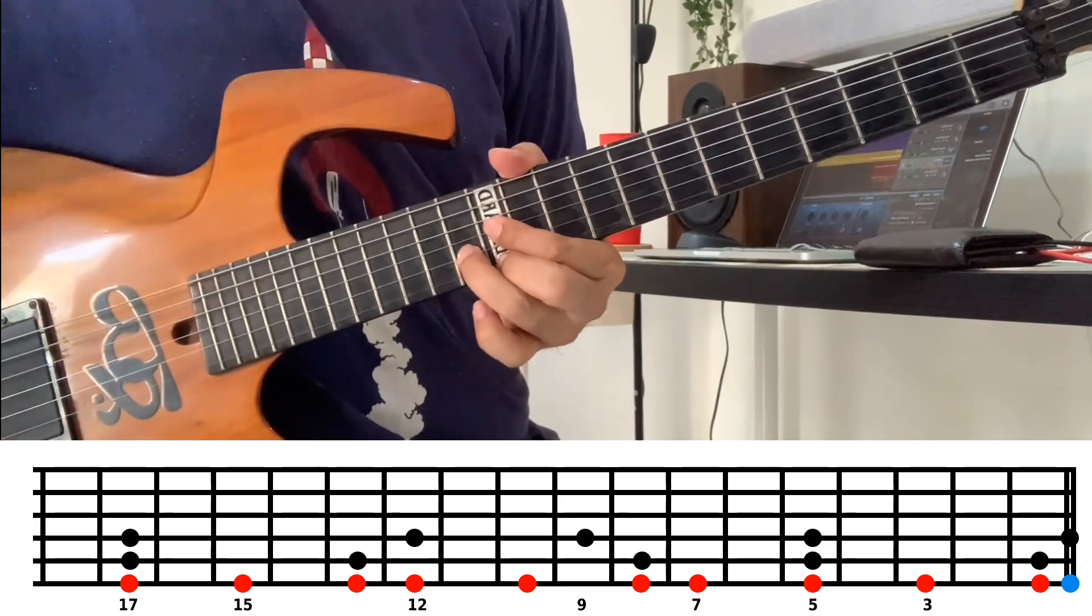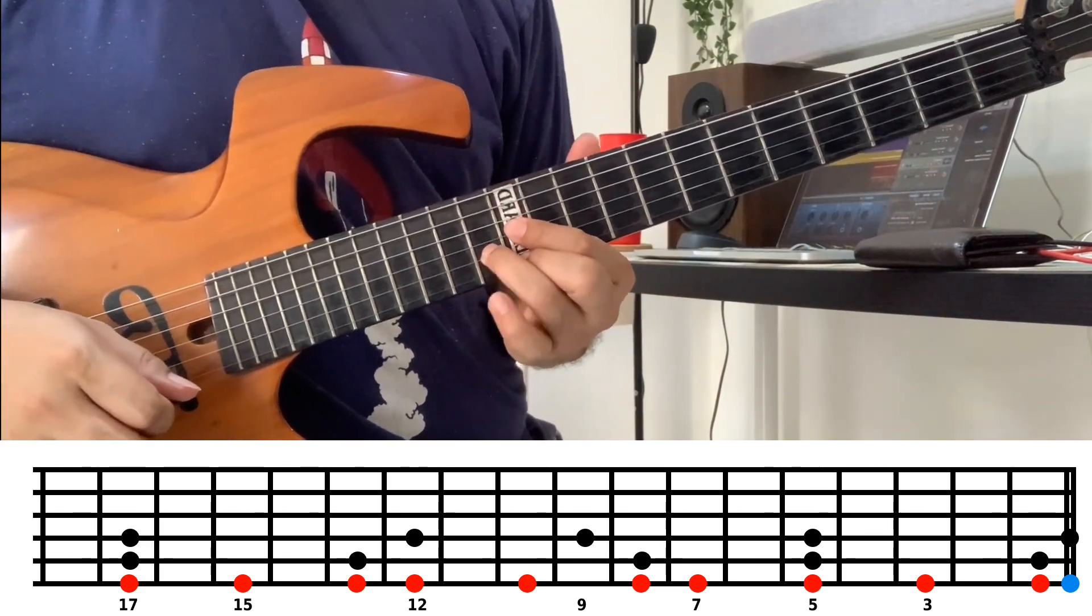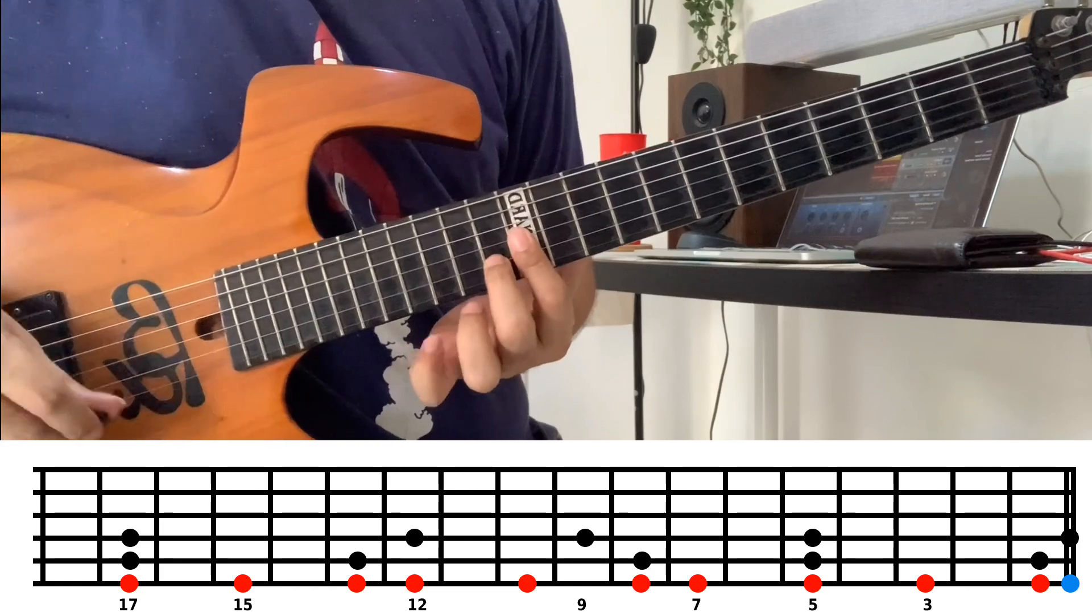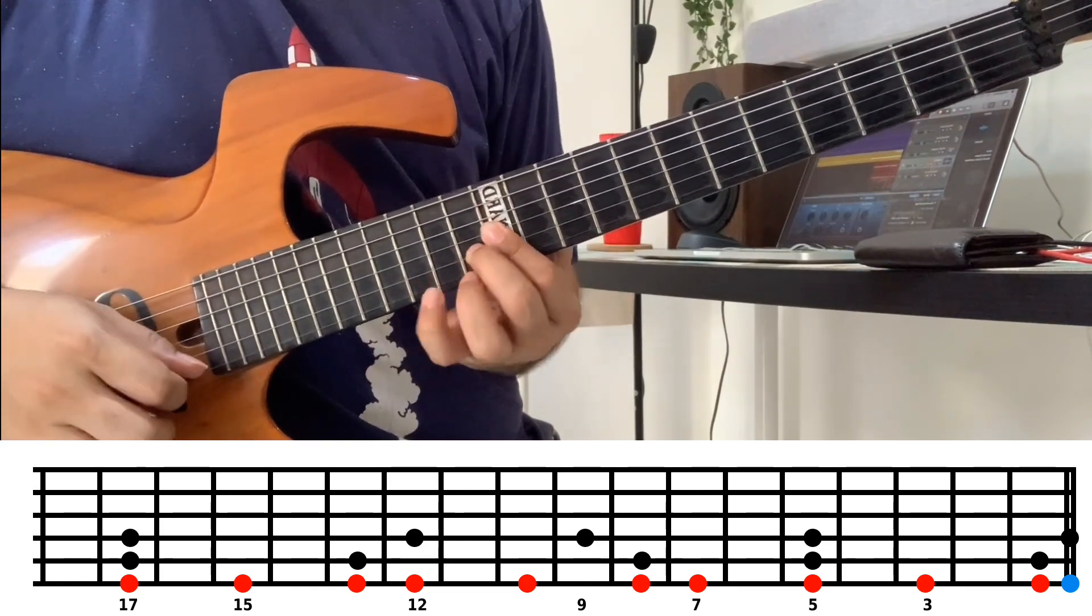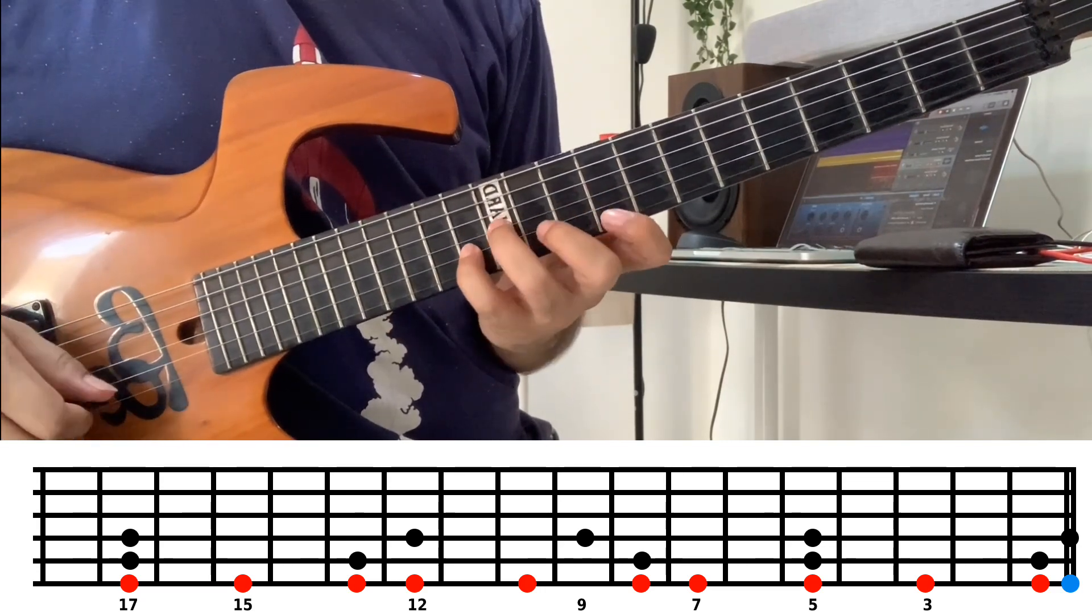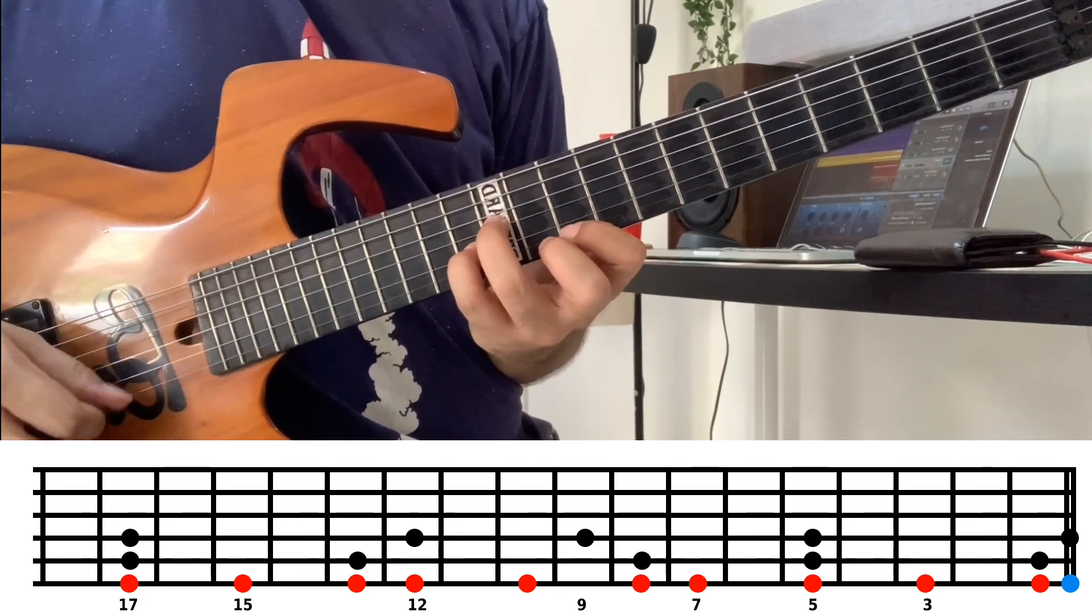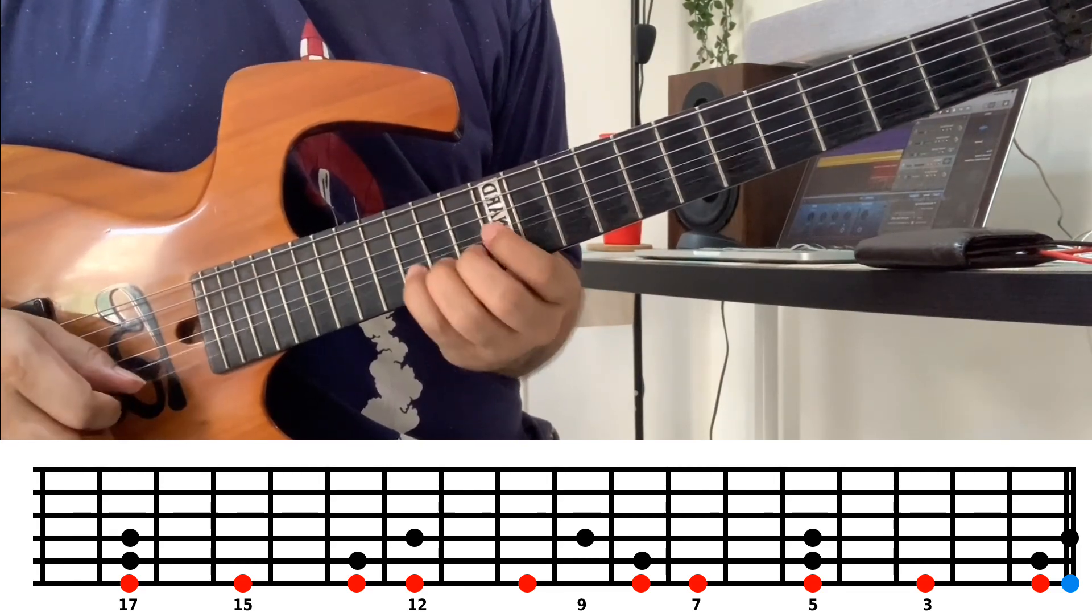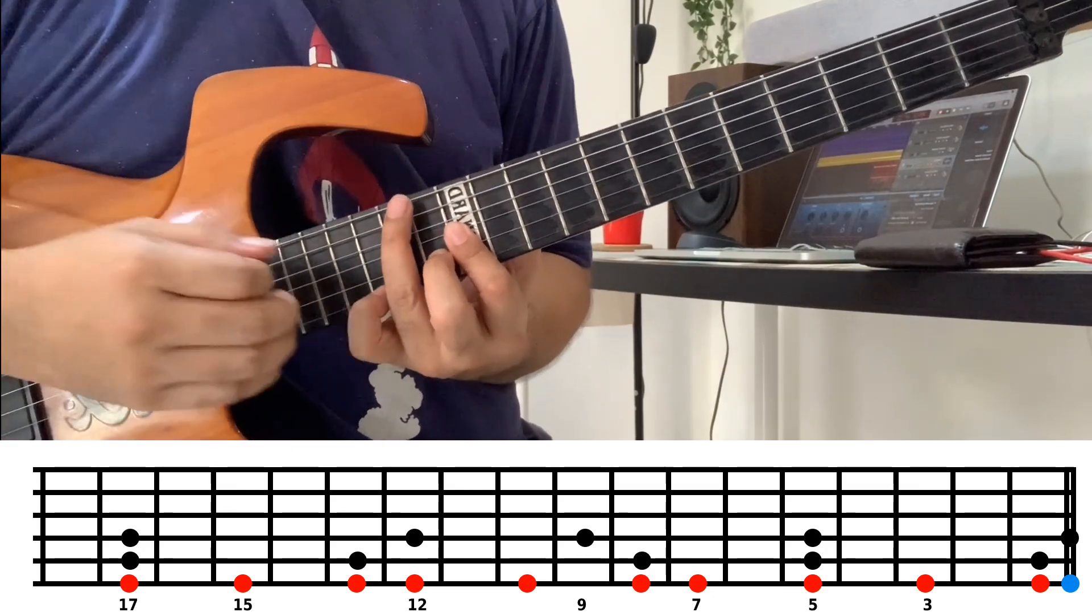For this one, this position is the same as that one before. We can also change. If it's like this, the shape - my fingers are all used for playing the chord. Only one finger left for playing melody. We can switch to this, so we have two fingers.